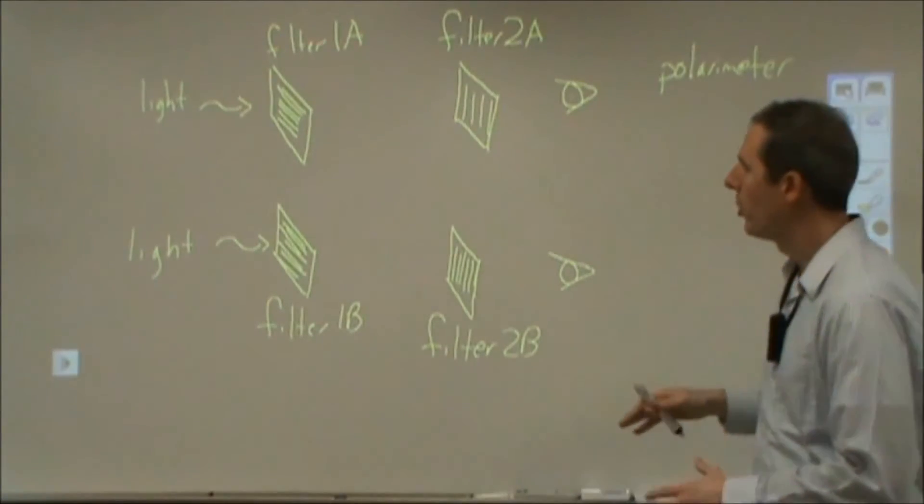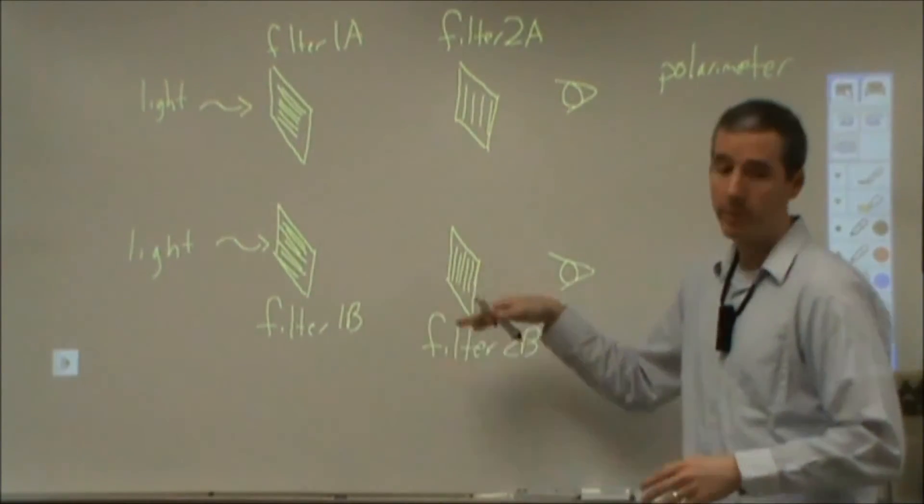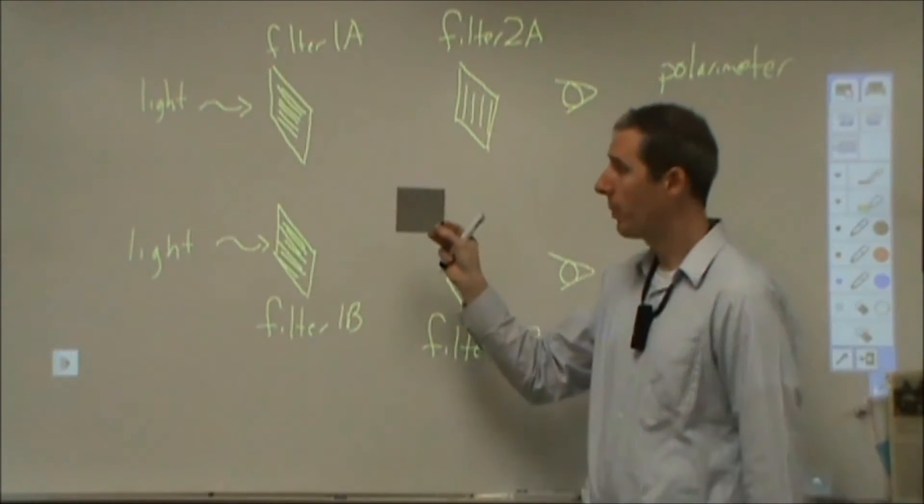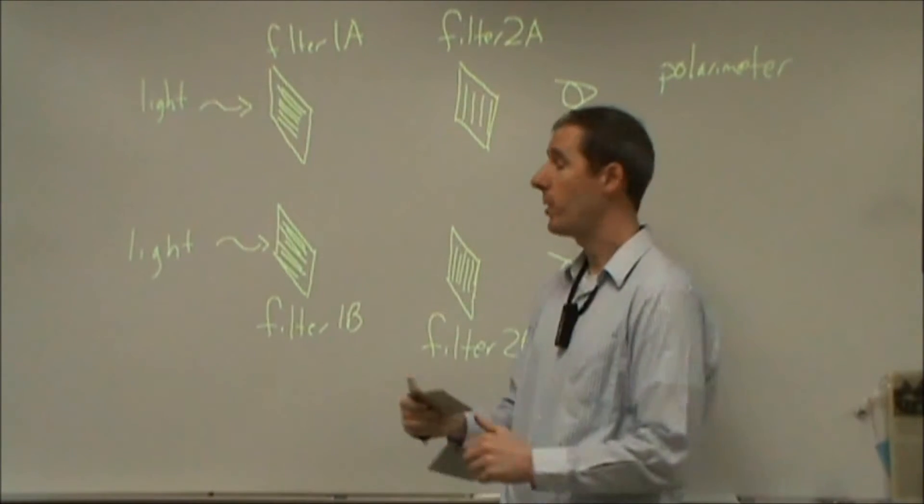I'm going to walk you through how the polarimeter actually works. We're going to start with no polarimetry. We're just going to look at what kind of light polarization is. So this is a polarizing filter. It's a piece of plastic that's been stretched in one direction.